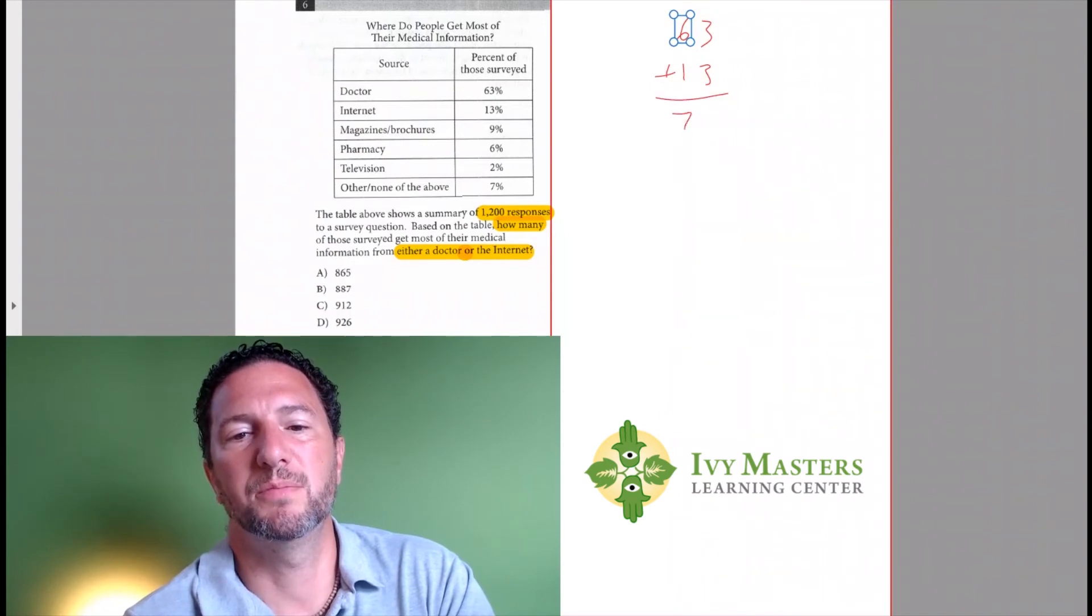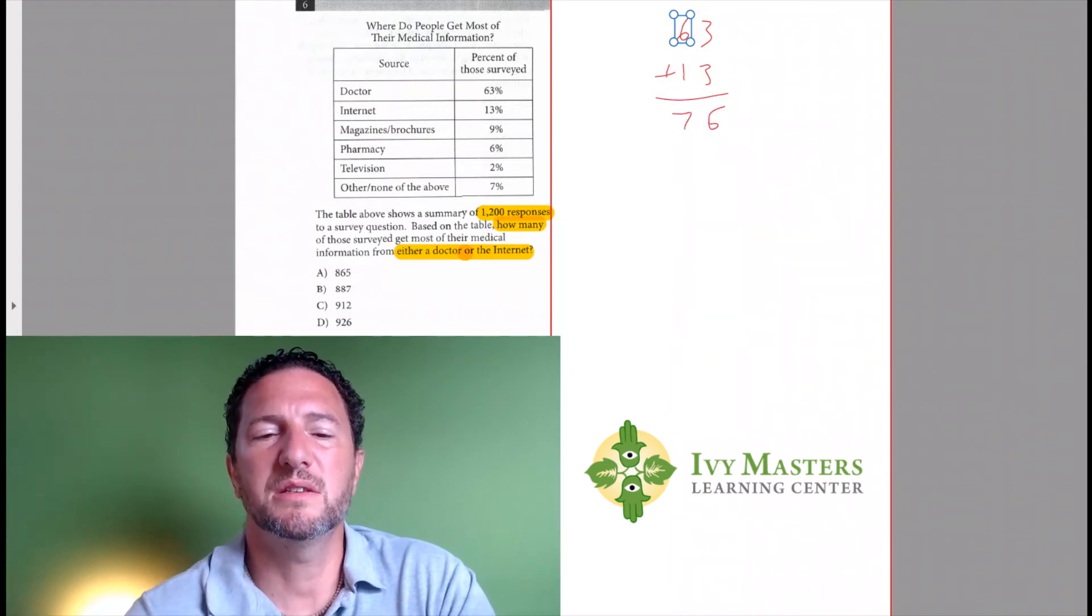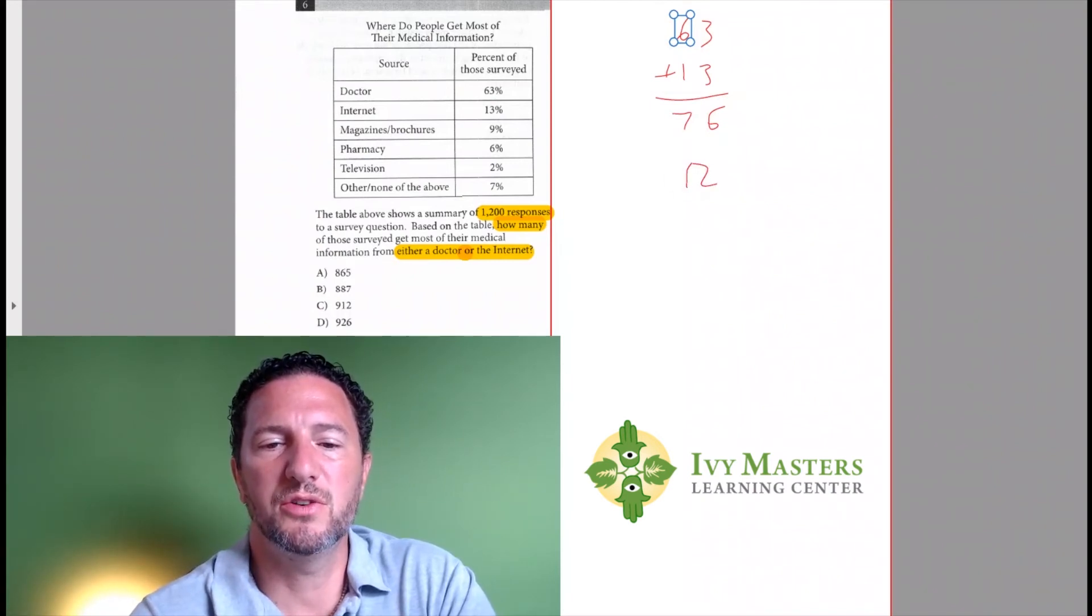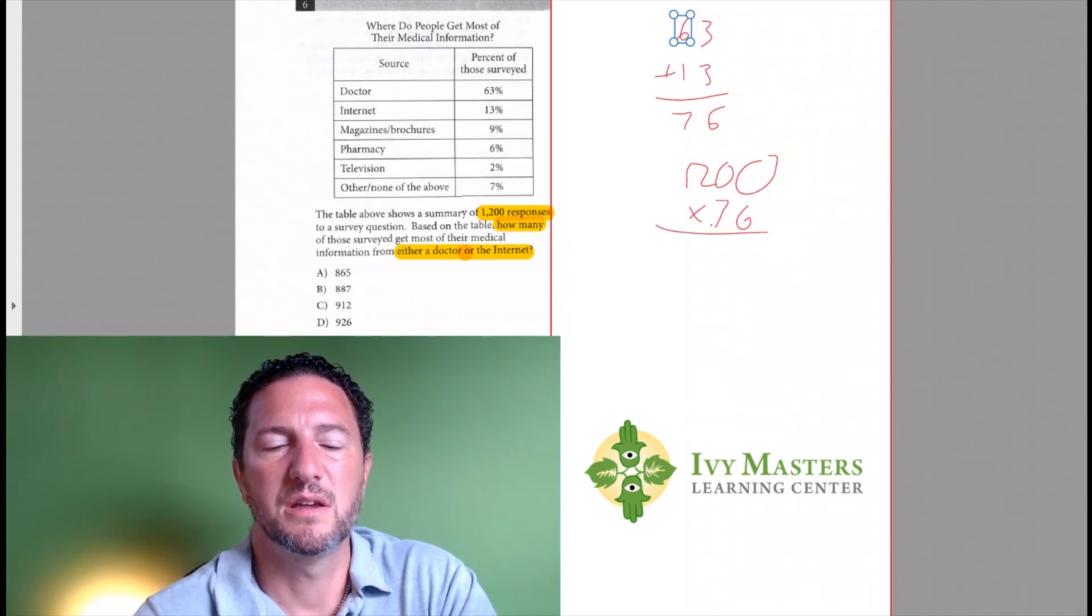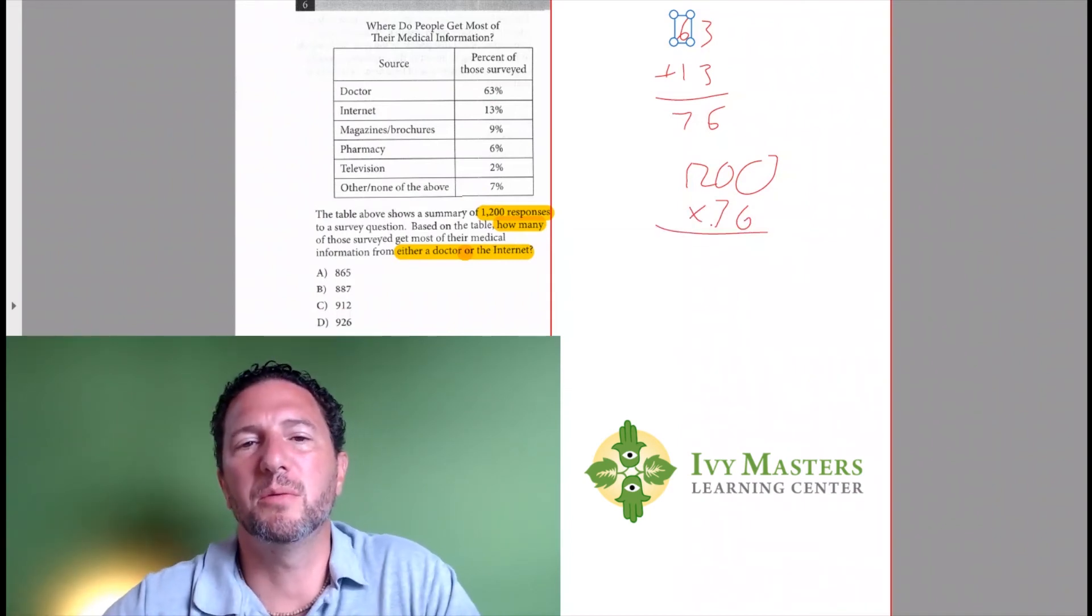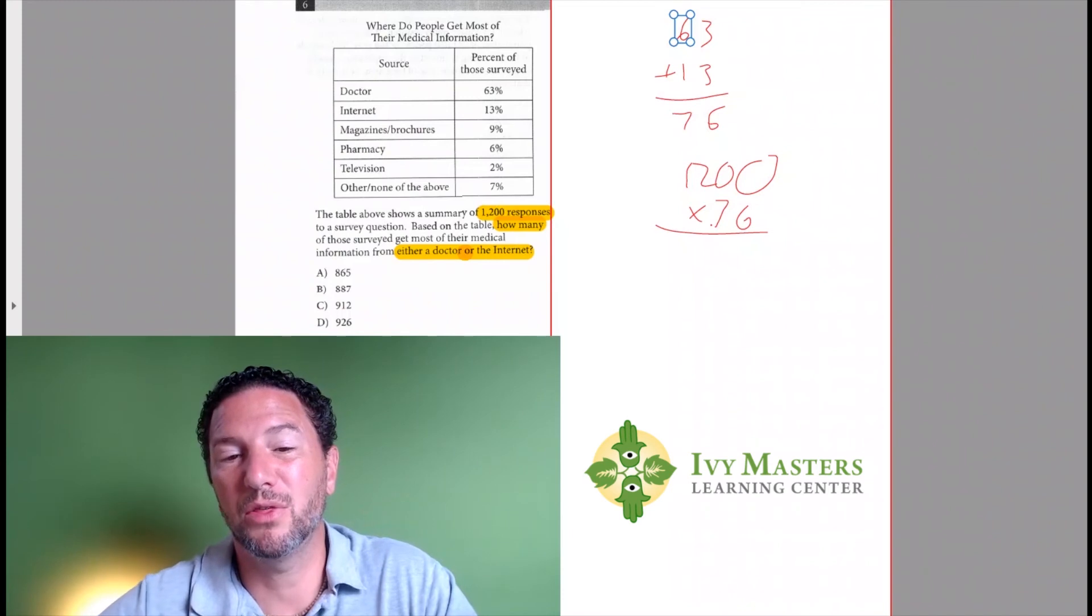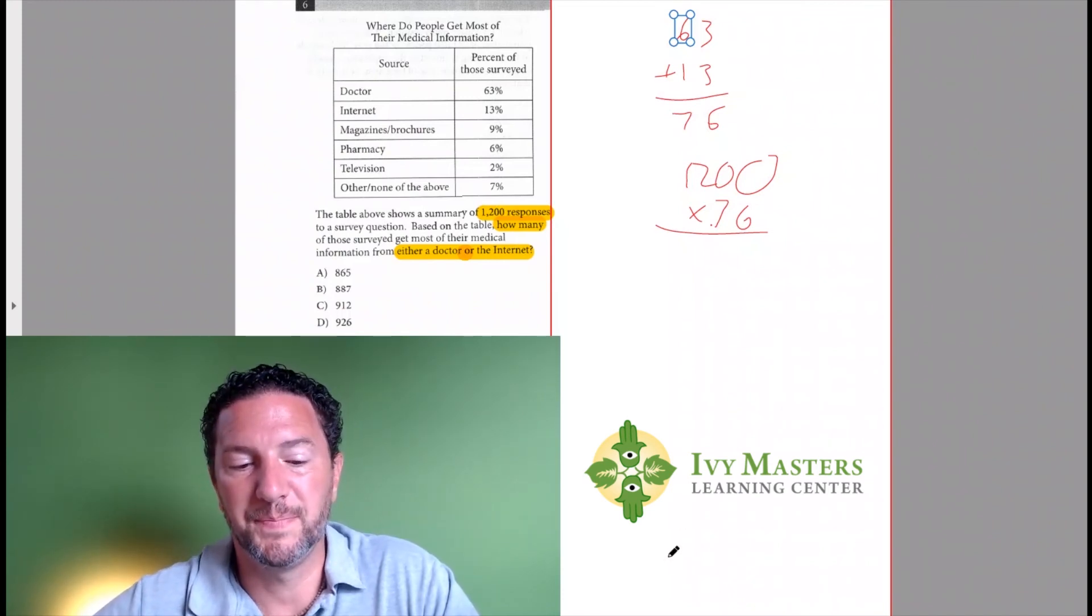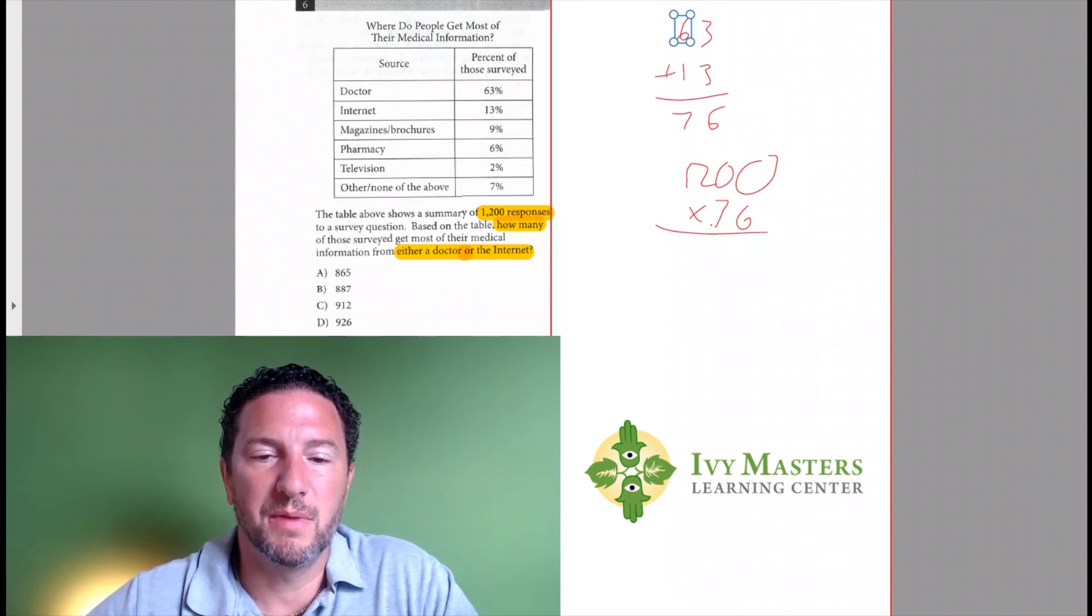And you wind up with 76. Now this is the without calculator math section, but if we take 1200 and we multiply by 0.76—and what I could do, you may be able to do this really quickly just by taking three-fourths of 1200, it's just going to be a hair more than that—but this is the with calculator math section.